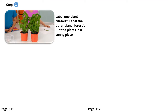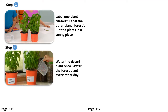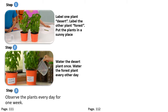Then they are going to put these plants in a sunny place. For step 2, these children are going to water the desert plant once and water the forest plant every other day. For step 3, these kids are going to observe these plants every day for one week. Let's predict what each plant will look like after one week — what do you think?